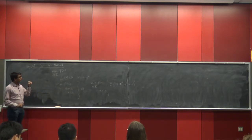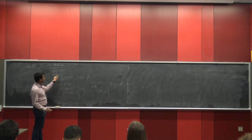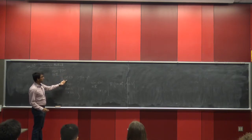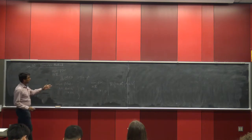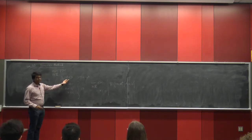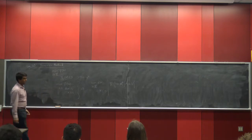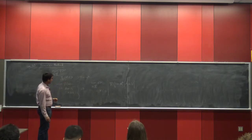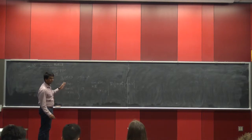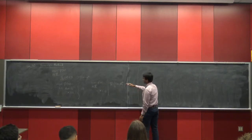In the KKT condition we had x in ℝⁿ, a set of equality constraints, and a set of inequality constraints. But here, we write the inequality constraints explicitly and push all other constraints inside the set X. That is one way of doing it; there are other ways as well.